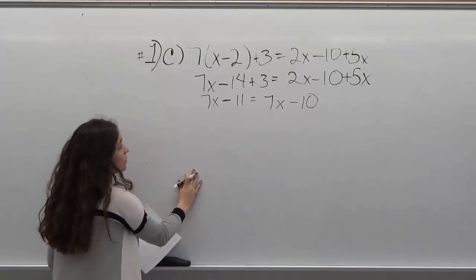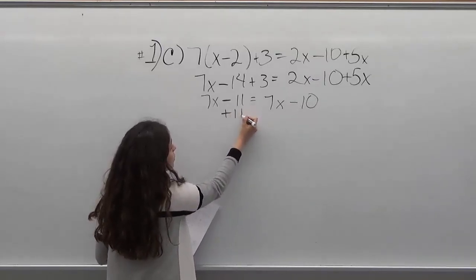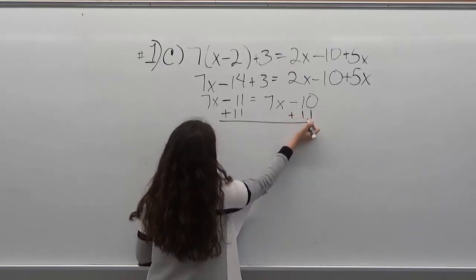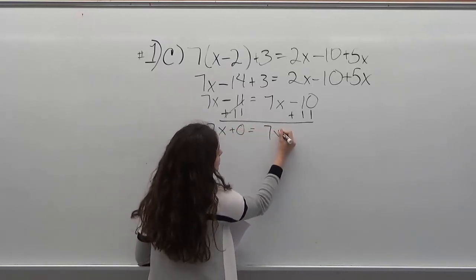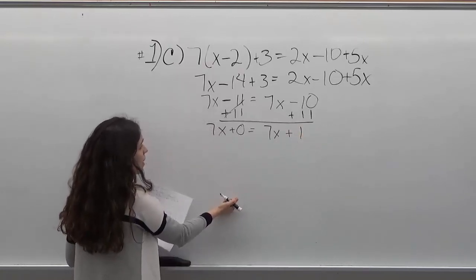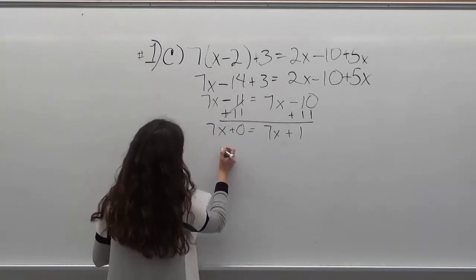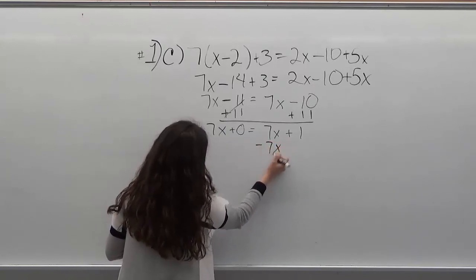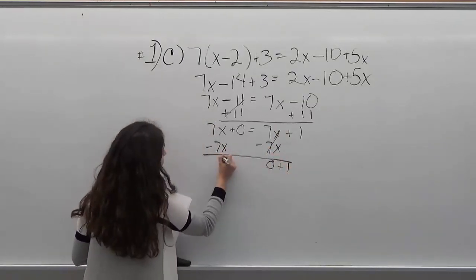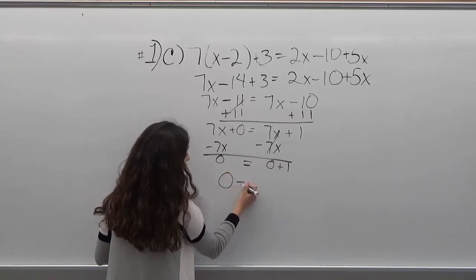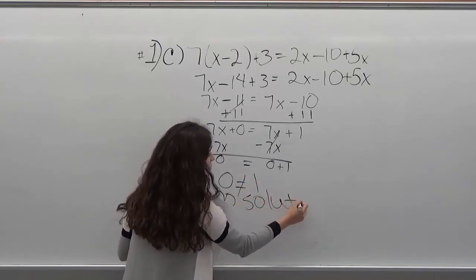So I'm going to start by adding 11 on both sides. On this side you're going to get 7x plus 0 equals 7x plus 1. Now you want to isolate x, so you're going to subtract 7x from both sides. Over here you're going to get 0 plus 1, and over here you're just going to get 0. And obviously 0 is not equal to 1, so your answer for this problem would be that there is no solution.